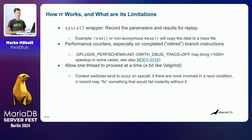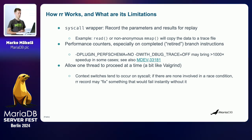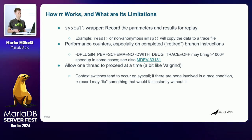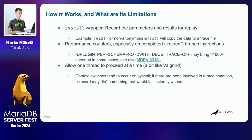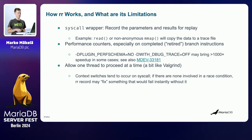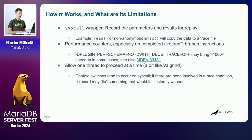How does RR work? Basically it emulates or wraps system calls. For example, if you have a read system call that reads something from a file, it will execute that system call but also record the results and write them to the RR trace file. Similarly for memory-mapping a file, it will copy the contents of that file range to the trace file, so that on replay it just reads things from the trace file instead of executing those system calls.